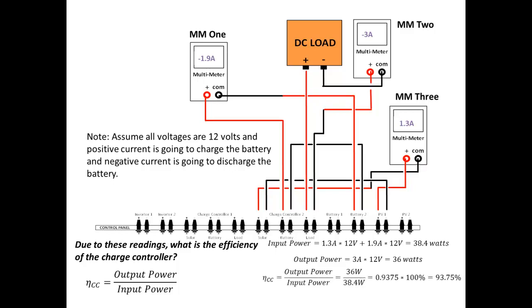To calculate the efficiency, we simply take the output power and divide it by the input power. And we get 0.9375. To convert to percentage, we multiply by 100% to get 93.75%.